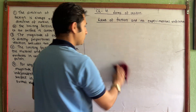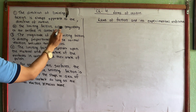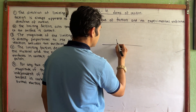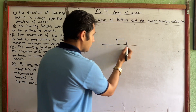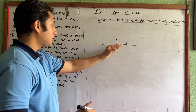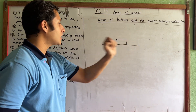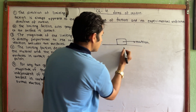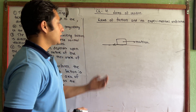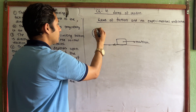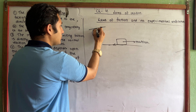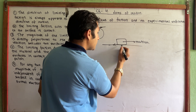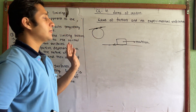The second law: limiting friction acts tangentially to the surface in contact. Tangential means the frictional force acts along the surface — in the horizontal direction, tangentially along the surface.